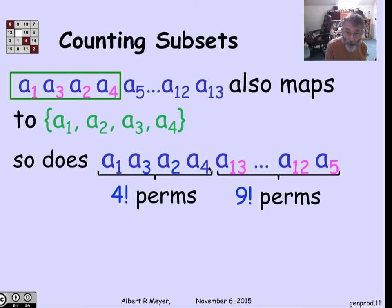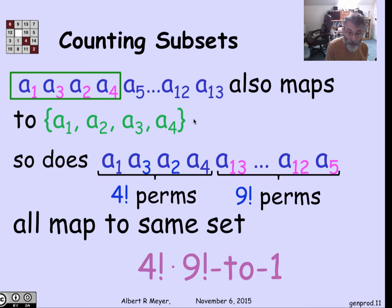Any permutation of the first four elements and the last nine elements is going to be a permutation that hits the same target A1 through A4. That's the only way we're going to hit A1 through A4. A given set A1 through A4 is hit by 4 factorial times 9 factorial permutations. This mapping is 4 factorial times 9 factorial to 1.